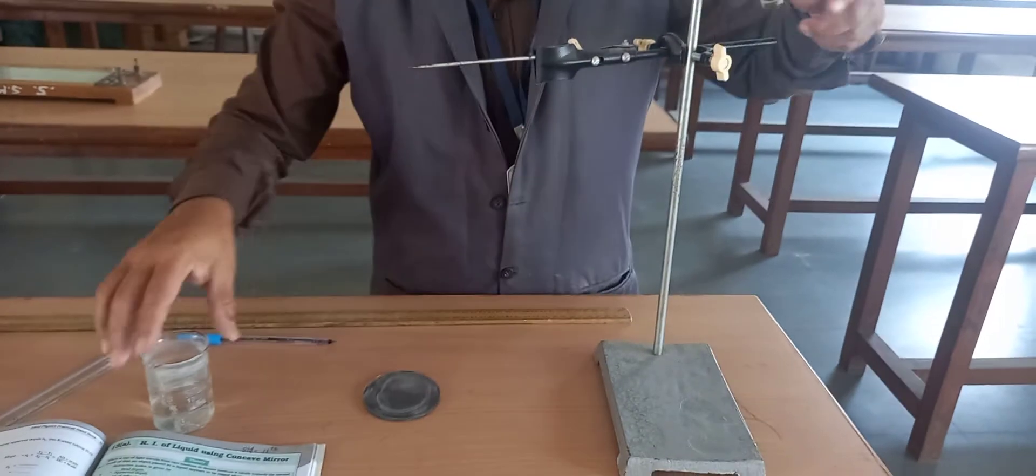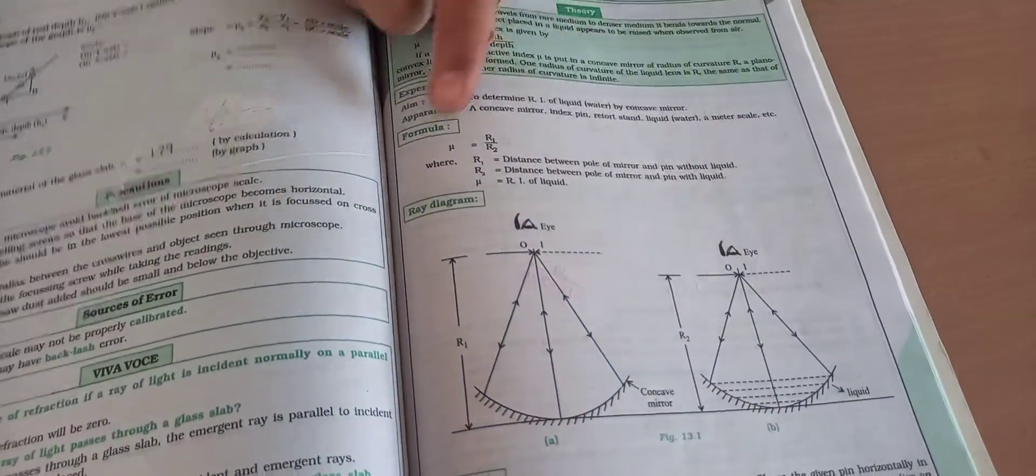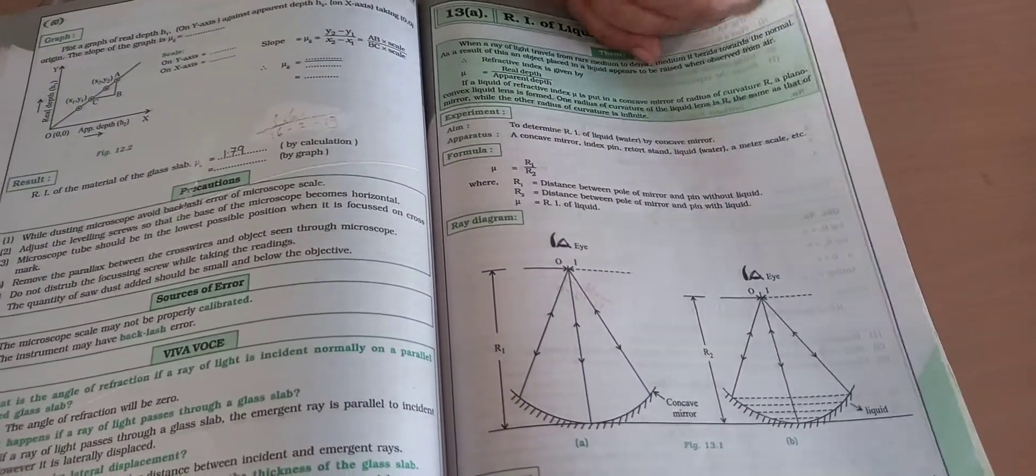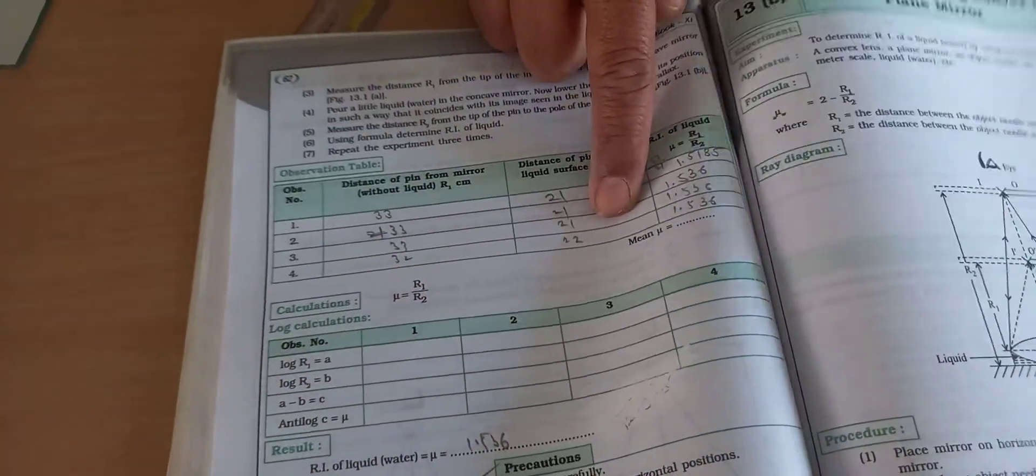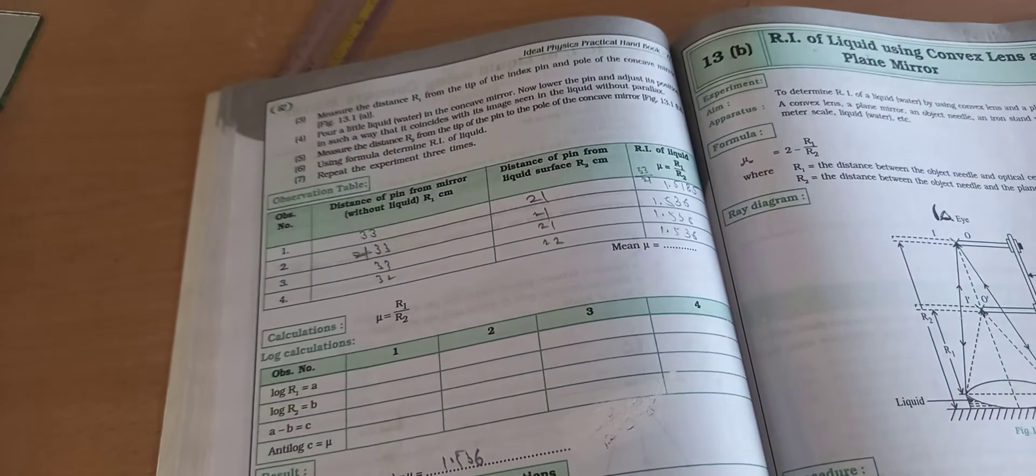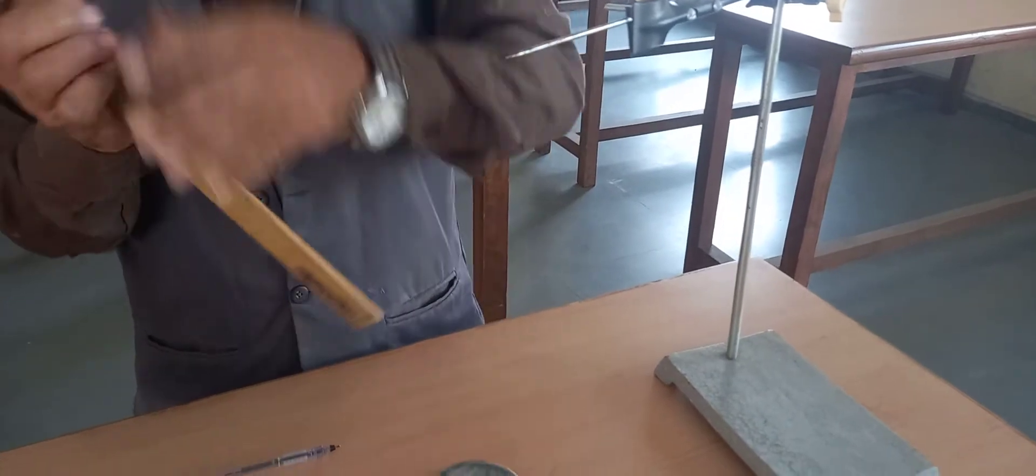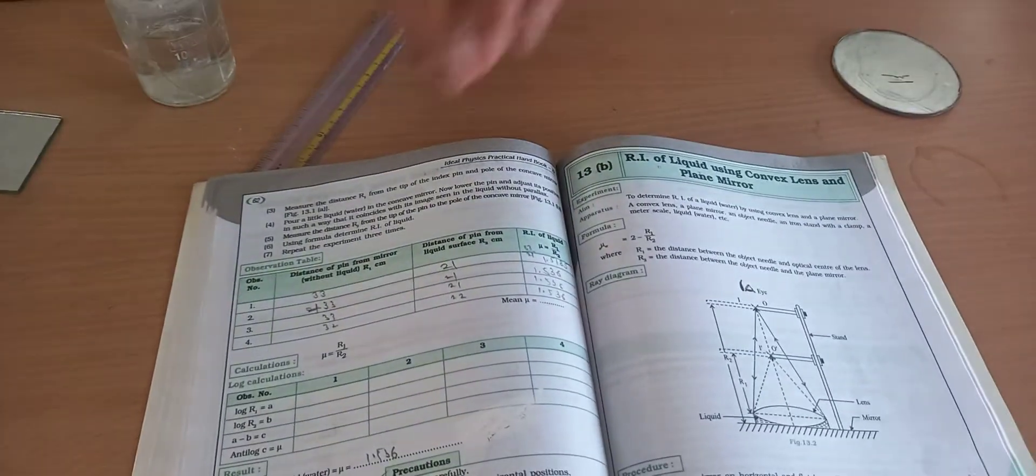μ = r1/r2. From this, we design the observation table. First column is r1, second column is r2. If I measure the distance with the scale starting from 0, it is around 33 cm. So record 33 in the r1 column.